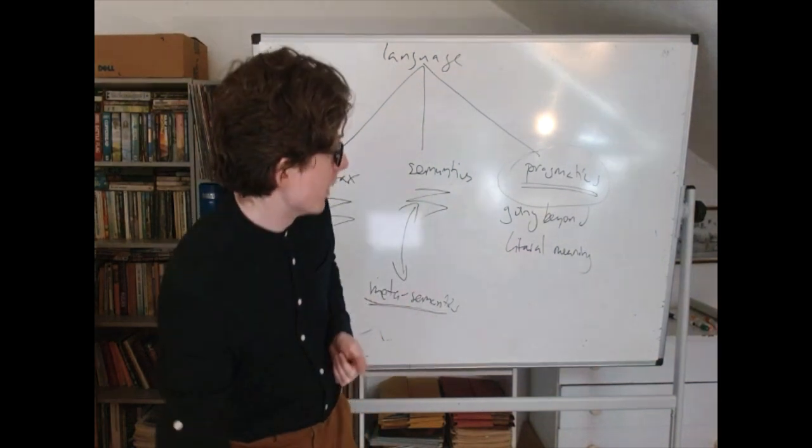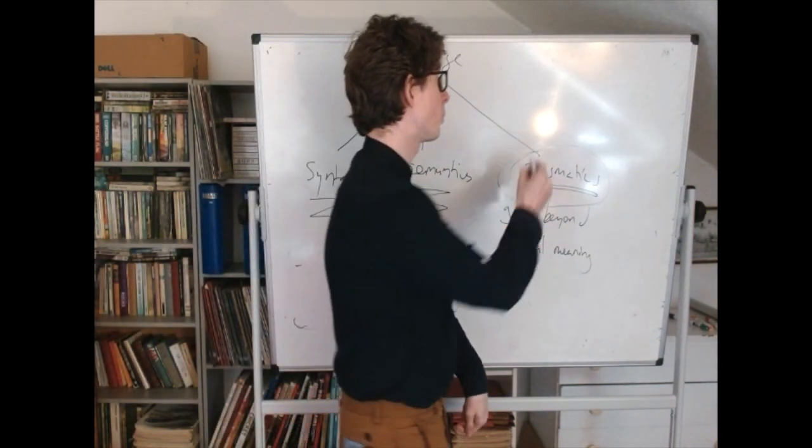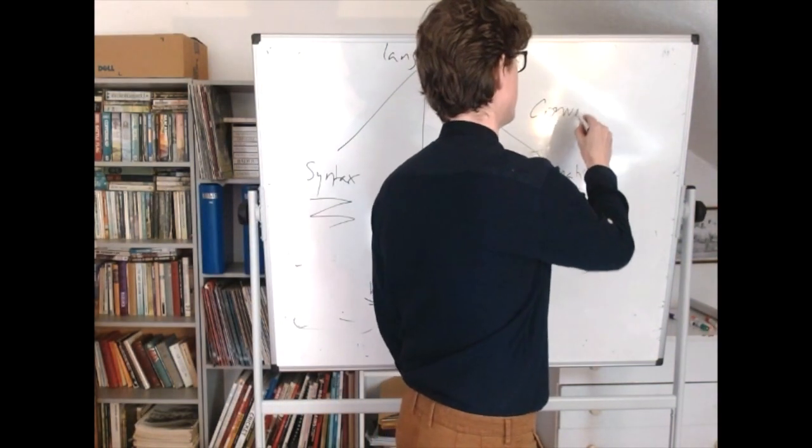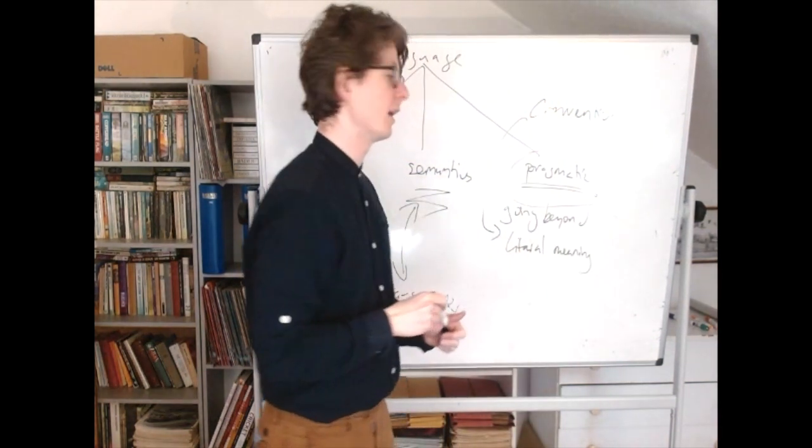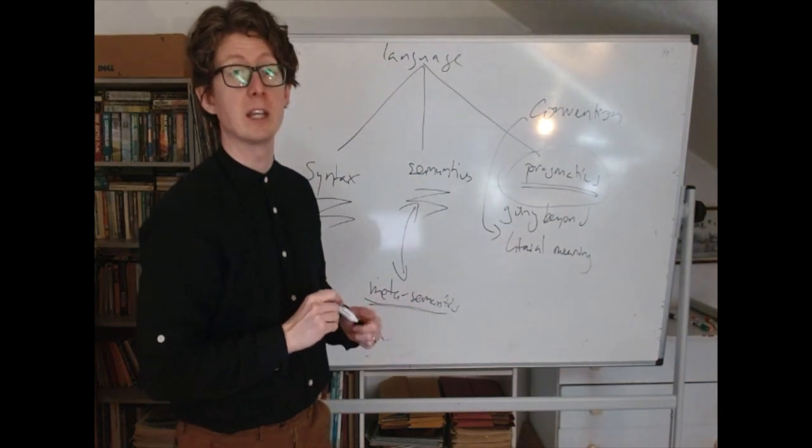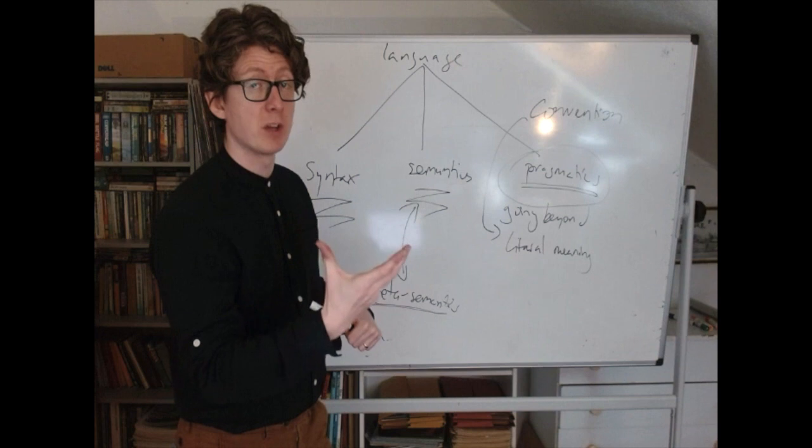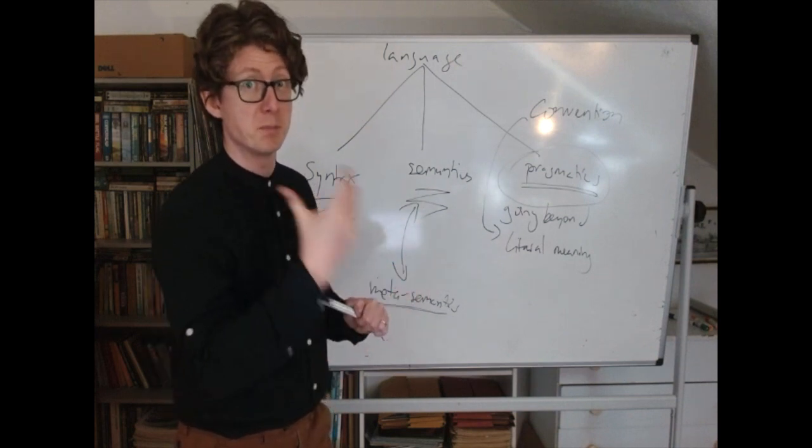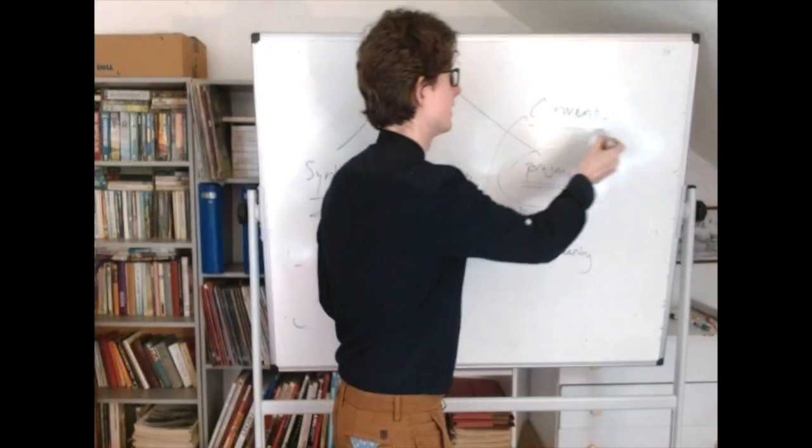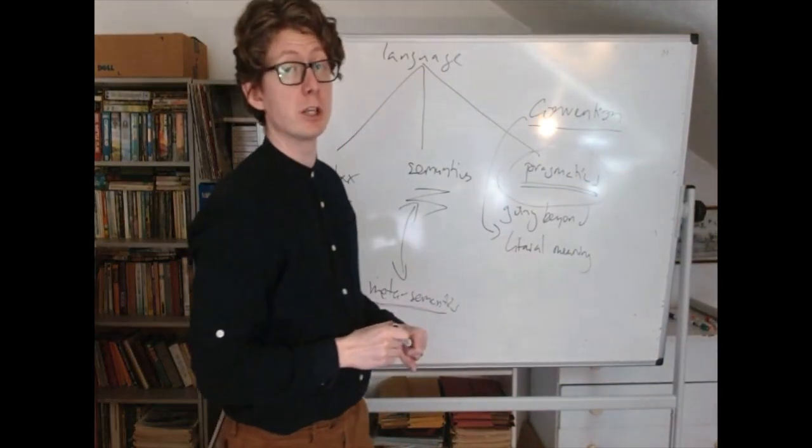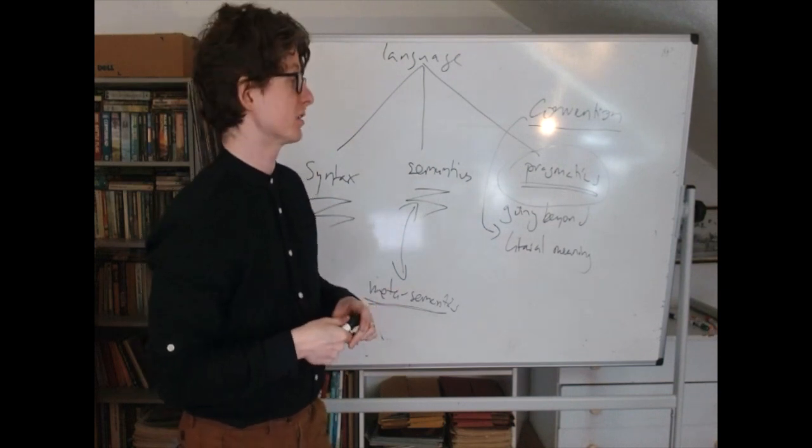One thing we'll see throughout is that for Austin, there's an important role for convention in pragmatics. Convention is often what allows us to go beyond the literal meaning of sentences to do something more. In the case of performatives, Austin thinks conventions are what allows performatives to be performatives. More generally, when we get to illocutionary force, he says it's really convention that determines the force in certain cases.